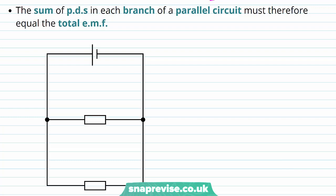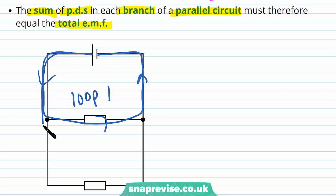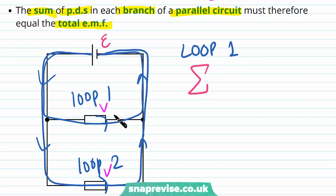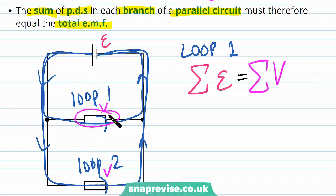The sum of the potential differences in each branch of a parallel circuit must equal the total EMF. We've got loop one from one branch and loop two from the second branch. Each loop is its own closed loop, so we consider the potential differences within that loop separately. We've got potential difference V across one resistor and potential difference V across the other. Applying Kirchhoff's second law to loop one: the total sum of EMFs must equal the total sum of potential differences of the component in that loop — which is just that one component.